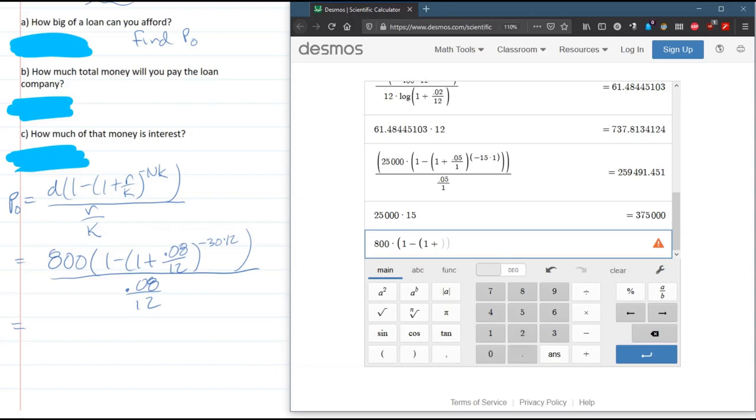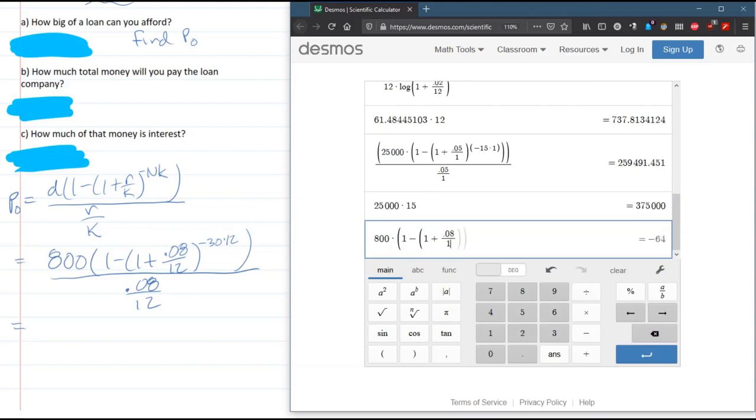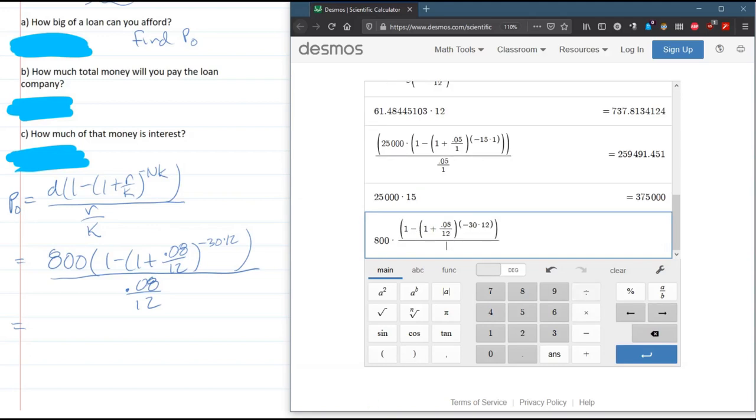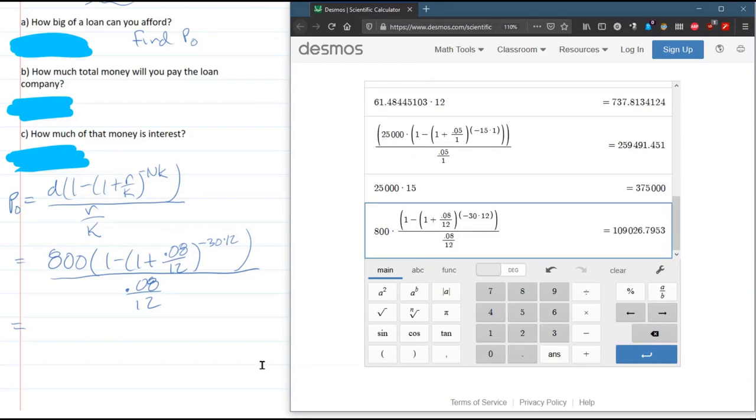Okay, so 0.08 divided by 12 and then close that parentheses. A to the B is use an exponent. You have to do parentheses when it's not a simple exponent. So this exponent is negative 30 times 12. Close the exponent parentheses. Close the next parentheses. Now, divided by 0.08 divided by 12.